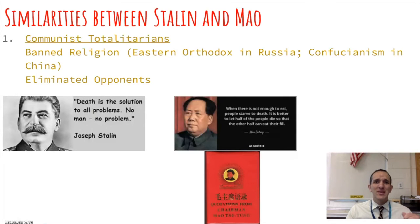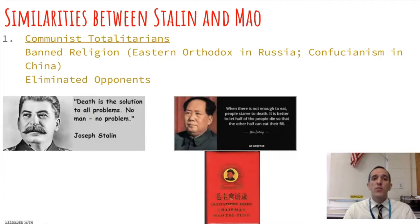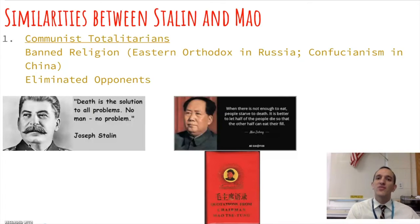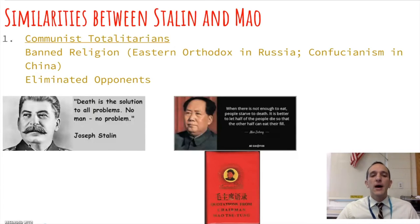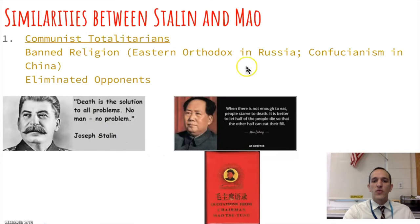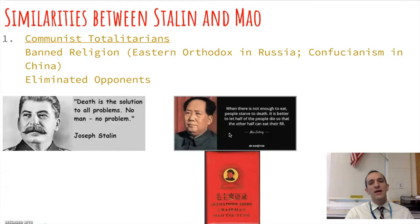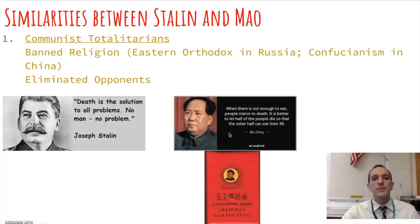Both leaders were also focused on eliminating their opponents — somewhat paranoid about being overthrown. Stalin conducted what are called the Great Purges, putting former allies and friends on trial for treason. A famous Stalin quote: 'Death is the solution to all problems — no man, no problems.' Mao said: 'When there's not enough to eat, it is better to let half the people die so the other half can eat their fill.' These guys had total control.